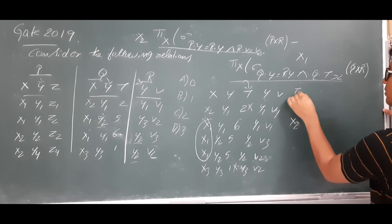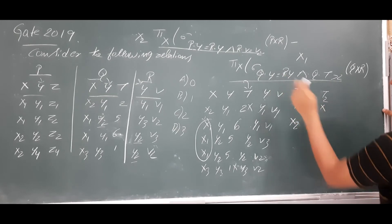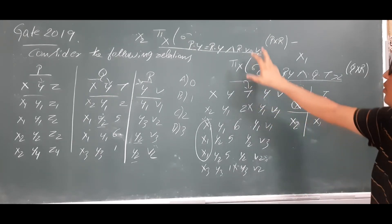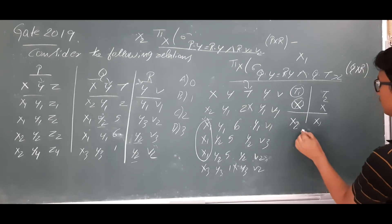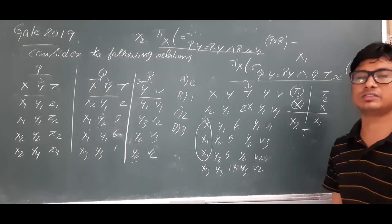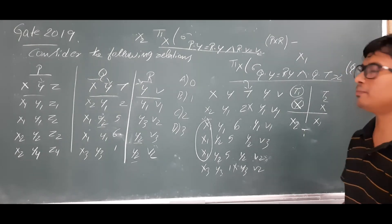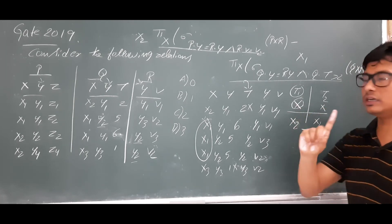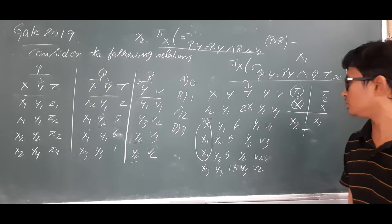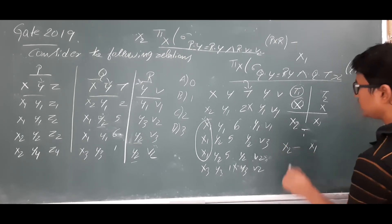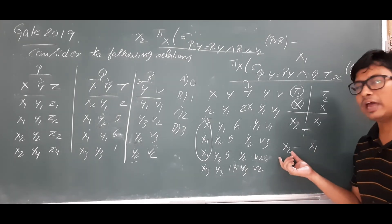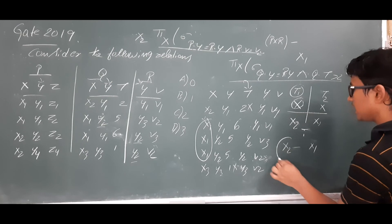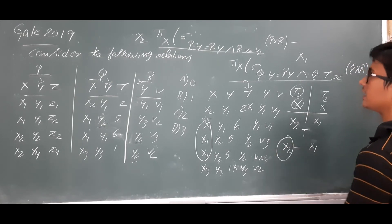Now I apply set difference. Let T1 be the result of expression one — attribute x, value x2. Let T2 be the result of expression two — attribute x, value x1. For set difference they must be union compatible: both have degree one and the same domain — yes, they are compatible. Set difference T1 minus T2 means: what is present in T1 but not in T2. x2 is in T1 but not in T2, so we take x2 as the output.